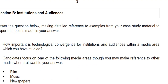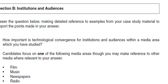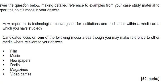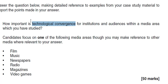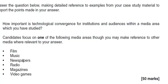Section B is the institutions and audiences section. Answer the question below making detailed reference to examples from your case study material — which is likely to be on the Daily Mirror — to support the points made in your answer. So it's not just writing about your case study; it's using your case study to support the points you make. The question in this case was: 'How important is technological convergence for institutions and audiences within a media area which you've studied?' You are then asked to focus on one of the following media areas — you can make reference to other media, but focus on one. In our case, we're focusing on newspapers and the newspaper industry.